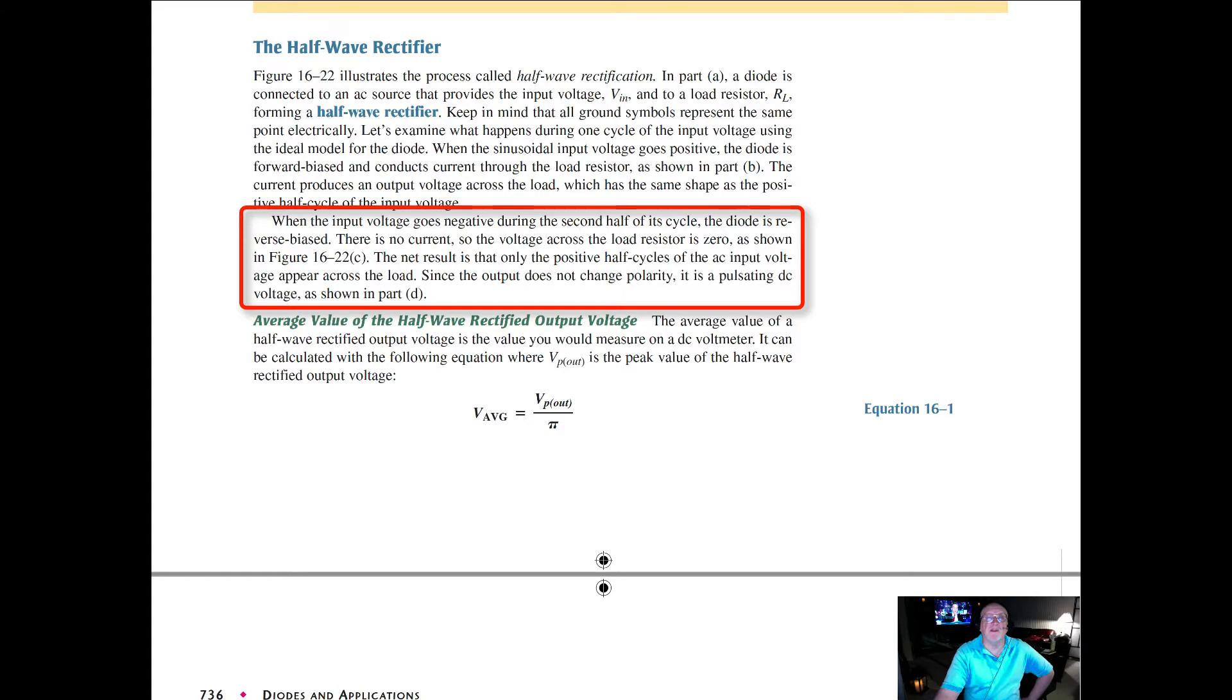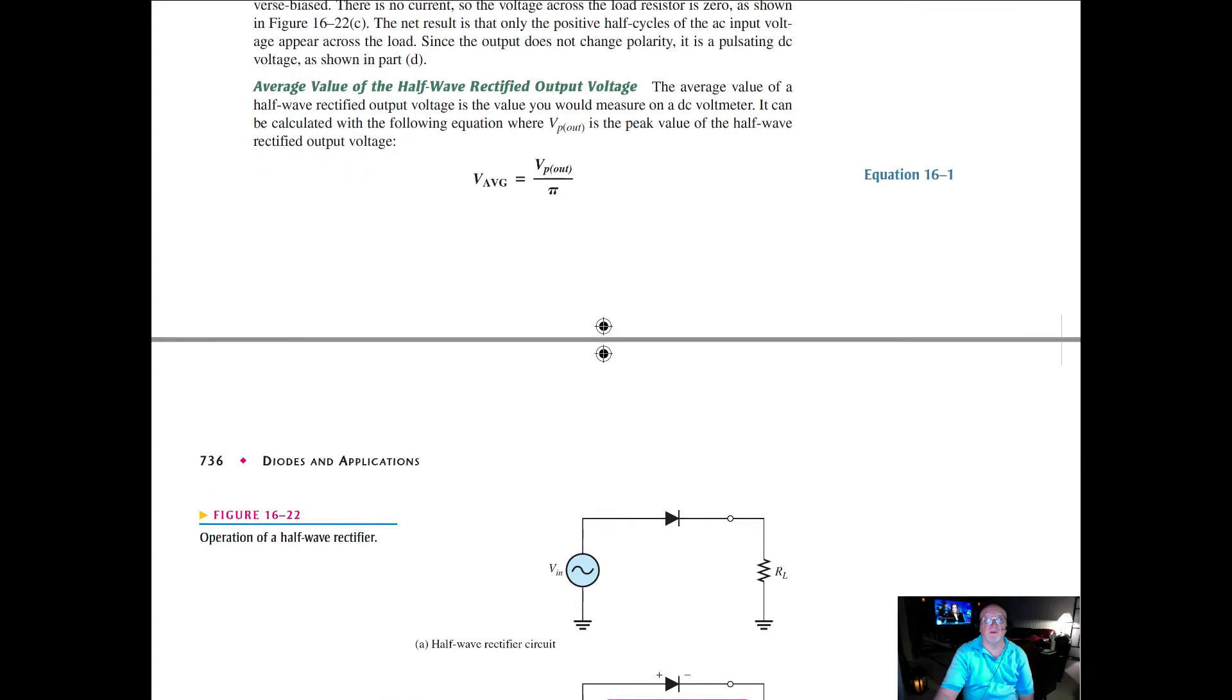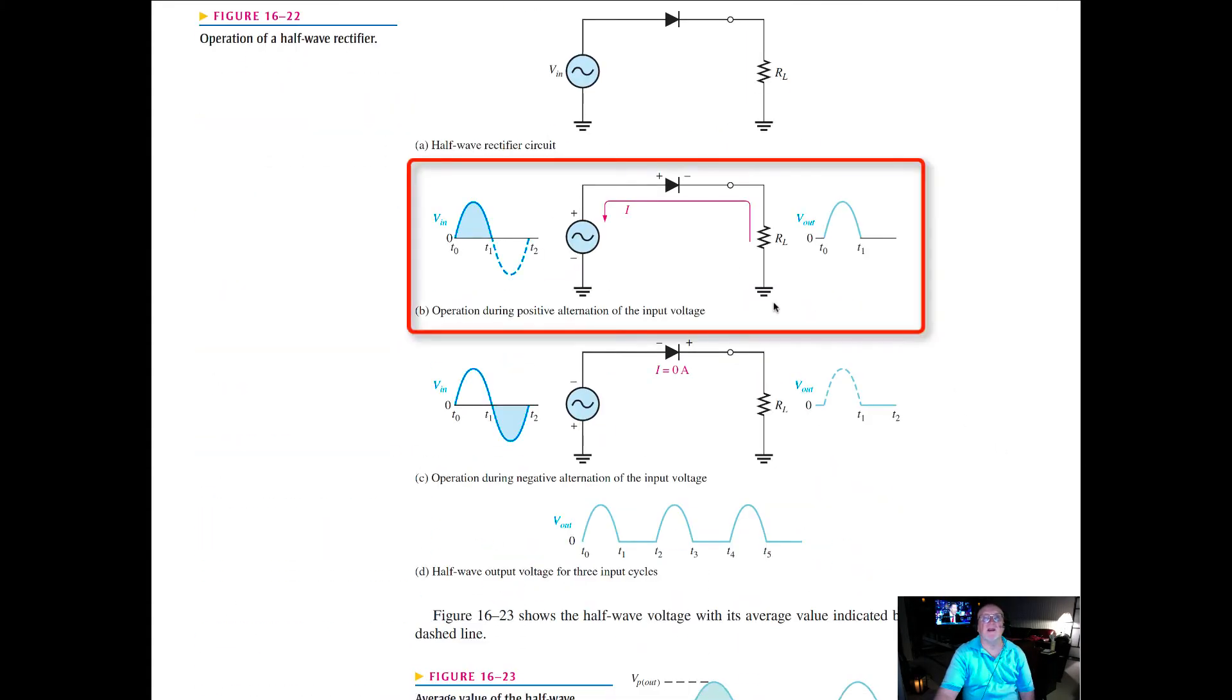Since the output does not change polarity, it is a pulsating DC voltage on the output. So again, half wave rectifier circuit, alternation only on the positive swing of the sinusoid.